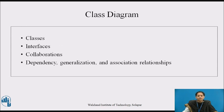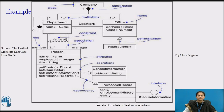A class diagram shows a set of classes, interfaces and collaborations, and their relationships. These diagrams are the most common diagrams found in modeling object-oriented systems. Here is an example of a class diagram. There is a class named Company, which is generalized into Department and Office. Each class can be seen with three different compartments: first its name, second its attributes, and third its operations. Department is connected to Person; Person is associated to Contact Information and Personal Record; and an Office has a headquarter. The different lists of attributes and operations can also be seen in this class diagram.